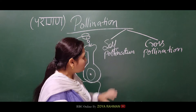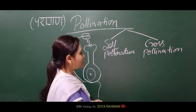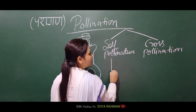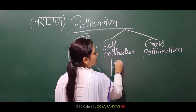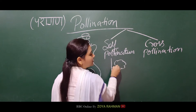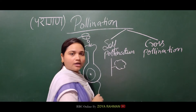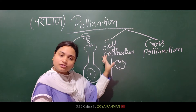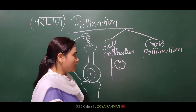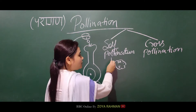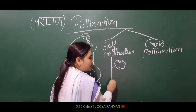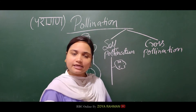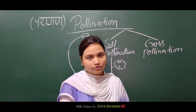When we talk about self-pollination, this type of pollination will occur within one flower. Self-pollination is within one flower on one plant — we call this self-pollination.